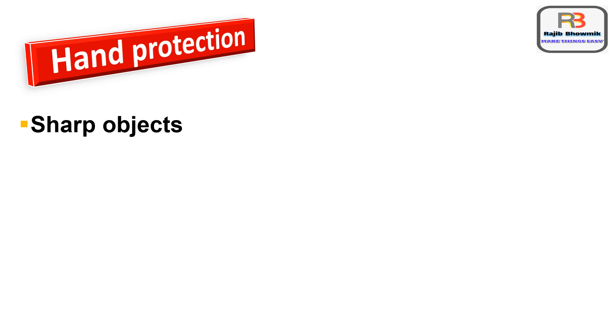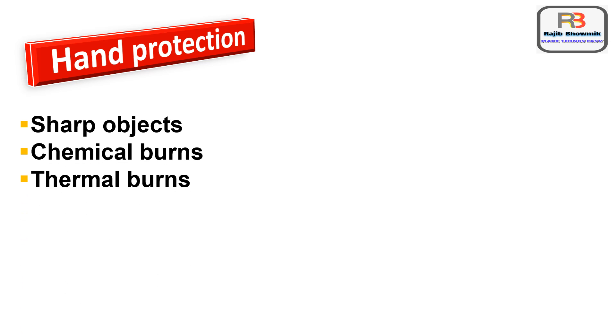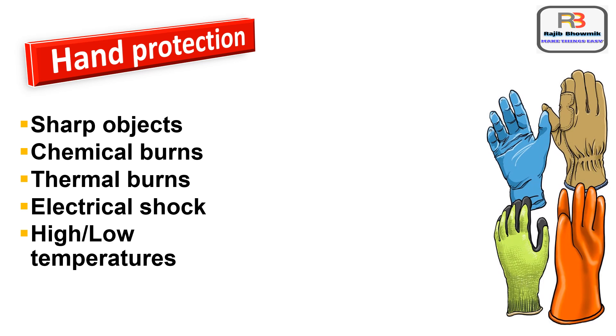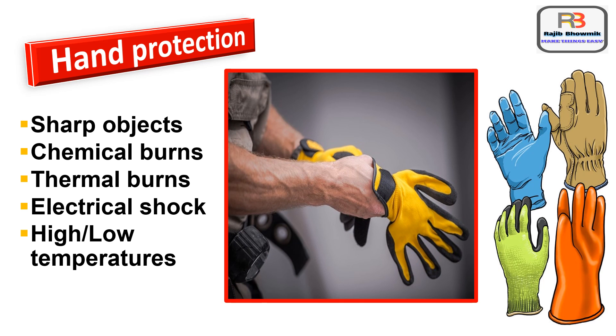Hand protection is needed when work becomes the potential cause of hand injury. Few examples of such hazards are sharp objects capable of causing cuts, abrasions or punctures, chemical burns, thermal burns, electrical shock, and high and low temperatures. Various types of hand gloves are used to avoid hand injury, as shown in the picture.